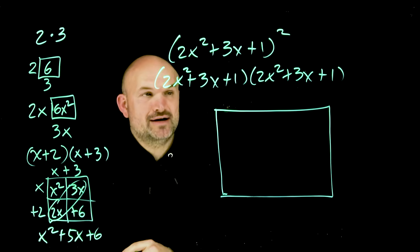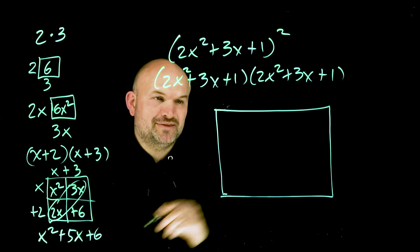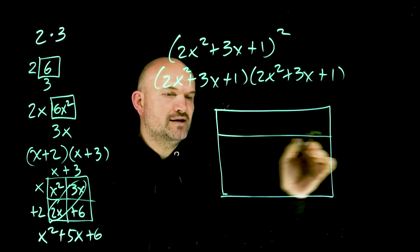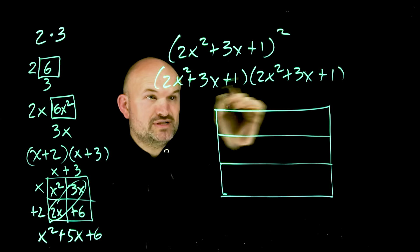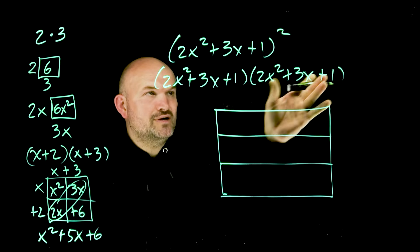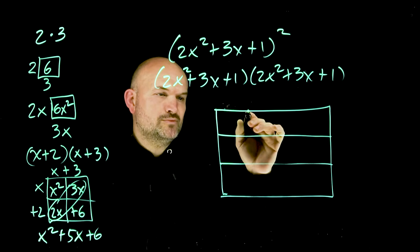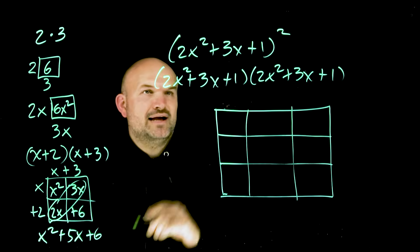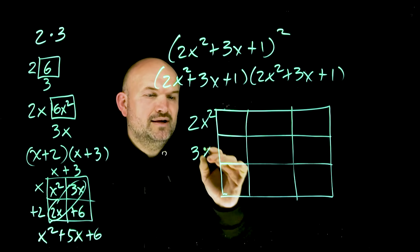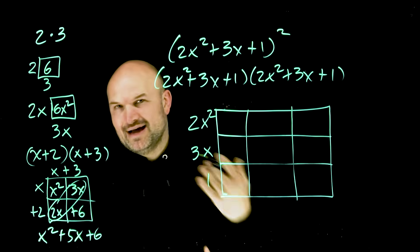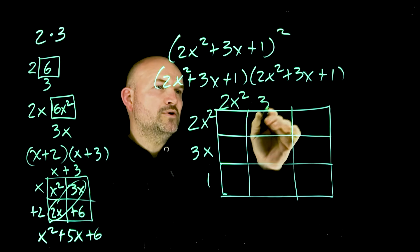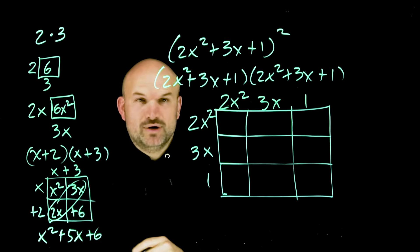So if I have a trinomial times a trinomial, I'm going straight to the box method. The box method is really simple. For how many terms you have, that's how many rows you create. Here I have three terms, so I'm going to create three rows. For how many terms in your next expression, you create that number of columns. I have three terms, so three columns. Then you simply write each term. So I have 2x², 3x, and 1. Obviously if they're negative, make sure you put a negative. In this case, I have 2x², 3x, and positive 1.